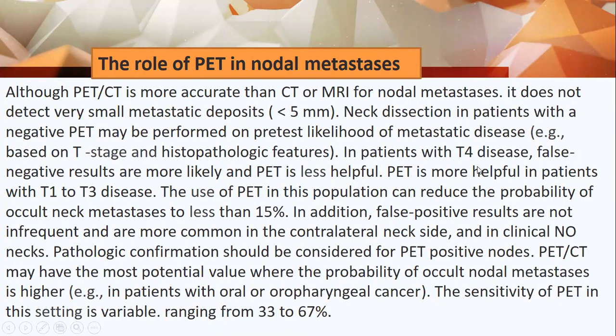What is the role of PET in nodal metastasis? One of the most important indications and uses of PET-CT in head and neck is the detection of nodal metastasis. PET-CT is more accurate than CT or MRI, but it does not detect very small metastatic deposits less than 5 mm. Neck dissection in patients with negative PET may still be performed based on pre-test likelihood, such as T-stage and histopathological features. In patients with T4 disease, false-negative results are more likely and PET is less helpful.